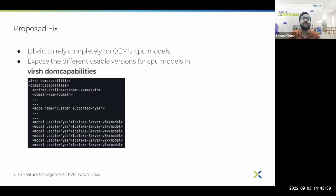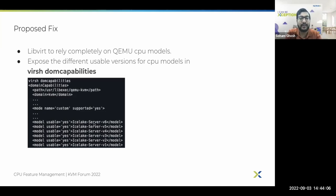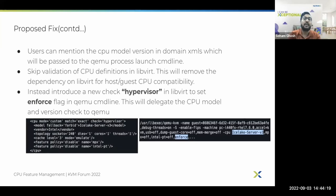We propose that libvirt should rely completely on QEMU CPU models. The dom capabilities command in libvirt should now expose the different usable versions defined in QEMU to users. As shown in the example, running dom capabilities would let you see what icelake-server versions can be used for defining CPUs for any VM on the host. Users can then look at the dom capabilities output, choose the intended CPU model version, and pass it into the domain XML. Libvirt then takes the CPU model version from the domain XML and passes it to the QEMU command line.